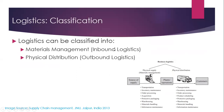Logistics can be classified into Inbound Logistics and Outbound Logistics. Between the Supplier and Manufacturer is Inbound Logistics, and between the Distributor and Manufacturer is Outbound Logistics. Inbound Logistics is also known as Materials Management Logistics, and Outbound Logistics includes Physical Distribution.